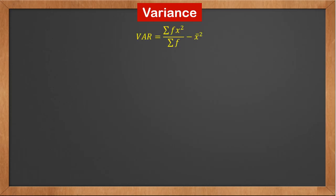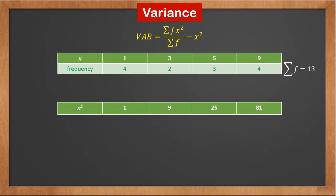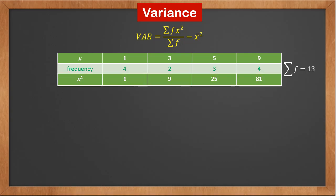The variance is calculated by the second method: mean of squares minus square of mean. The mean of squares is sigma f x squared, over sigma f. For this grouped data, we first calculate sigma f, then add a row of x squared. They are 1, 9, 25, and 81.